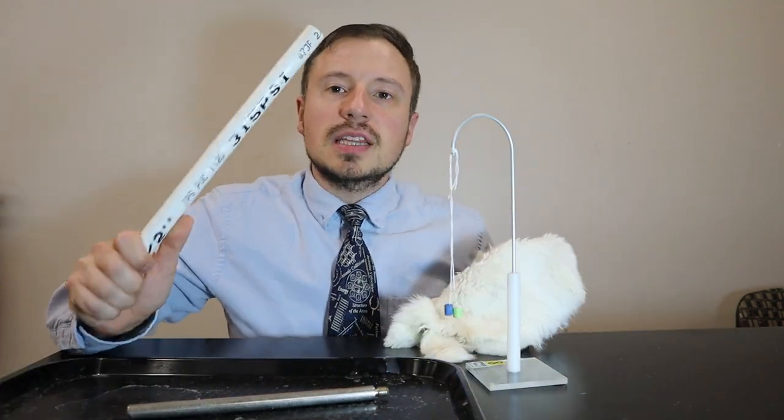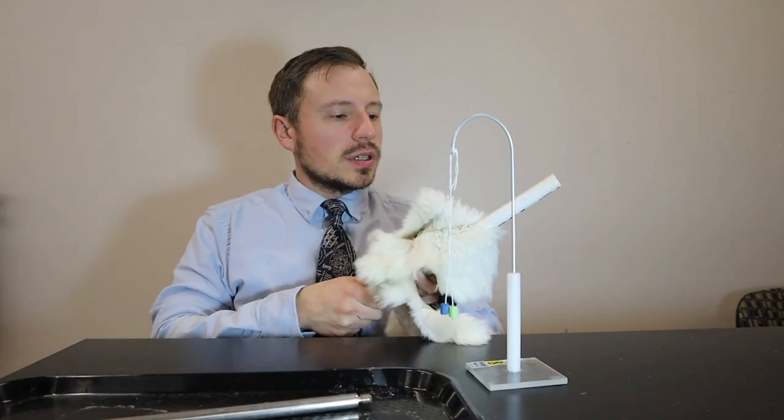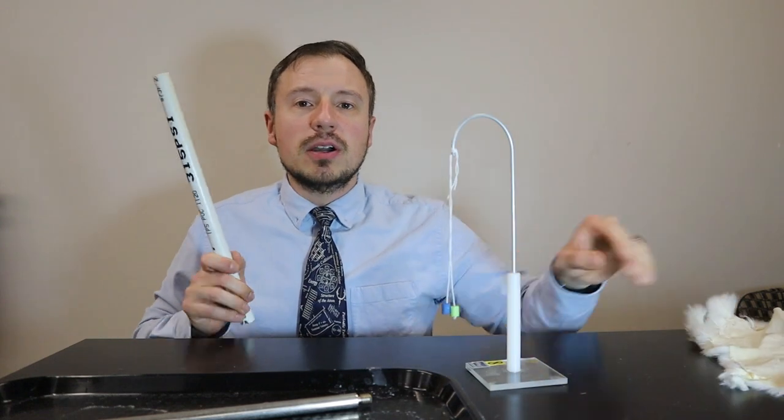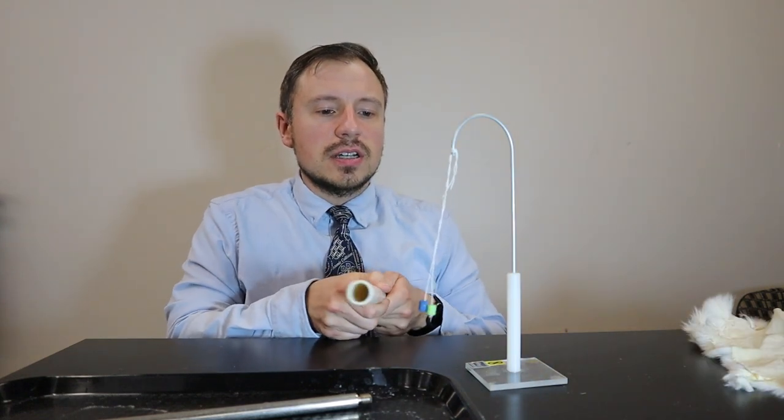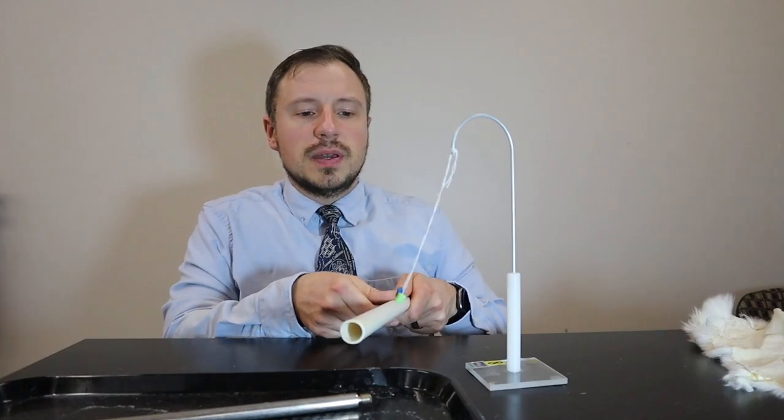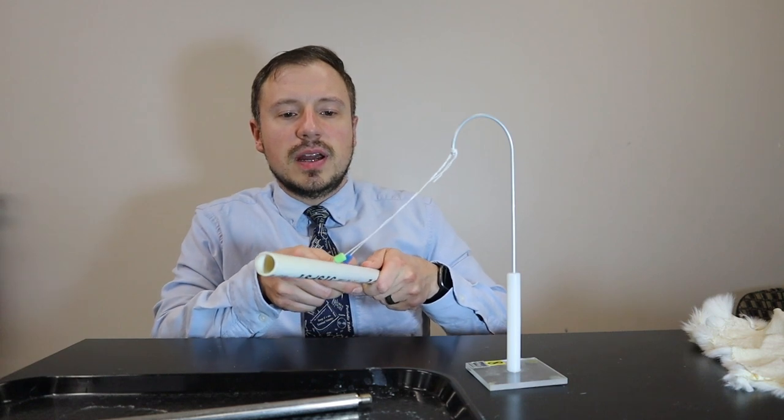Now I'm going to take that PVC pipe first and I'm going to rub it with the fur and I'm going to place it next to the pith balls but I'm not going to touch it. So you can see there is an attraction. The pith balls are being attracted to the PVC pipe and I can move them around.